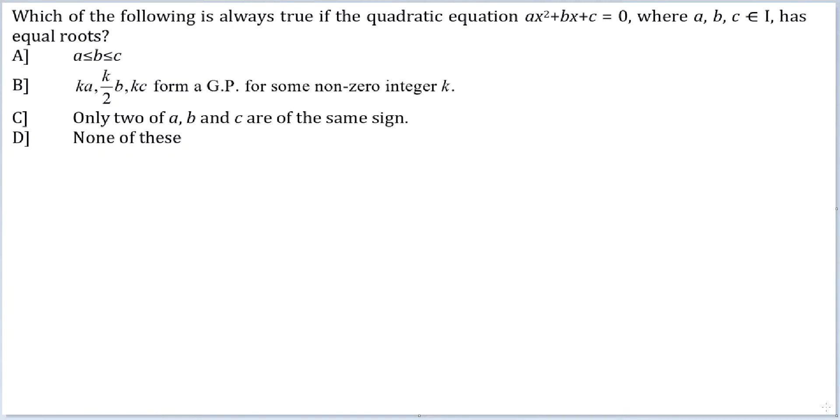Let's look at this question: Which of the following is always true if the quadratic equation ax² + bx + c = 0, where a, b, c belong to integers, has equal roots? If it has equal roots, it effectively means that the discriminant should be 0.